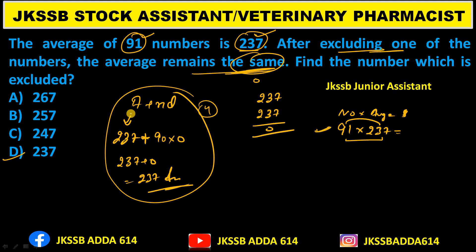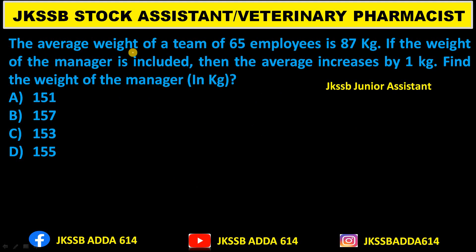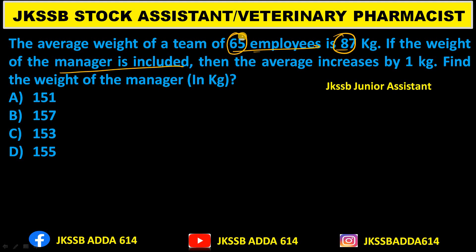Next question: The average weight of a team of 65 employees is 87 kg. If the weight of the manager is included, the total number becomes 66. The average increases by 1 kg. Using the a+nd formula, 'a' is the first average: 87, 'n' is the final number: 66, and 'd' is the difference: 1.